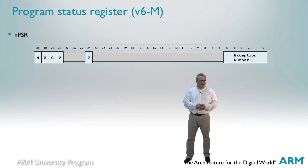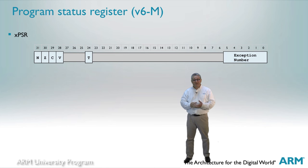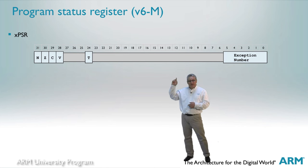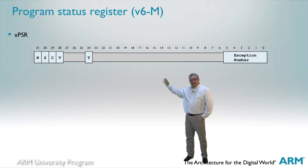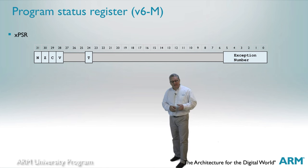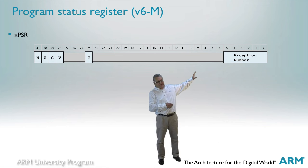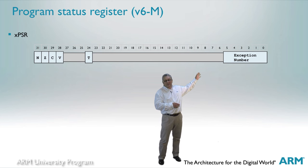The status register for Cortex-M cores is much simpler, which illustrates the fundamental simplicity of the Cortex-M architecture. You'll recognize the ALU status bits from the previous version. There is a T bit, but since most Cortex-M cores only support the Thumb instruction set, that bit is always set to 1 and you should never attempt to change it. Finally, there's a field that contains the currently active exception number, used when the core is executing an exception handler.